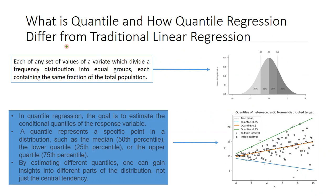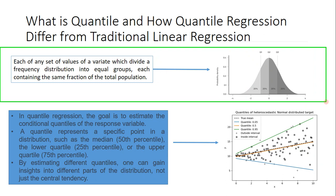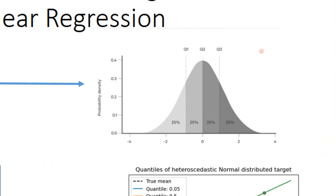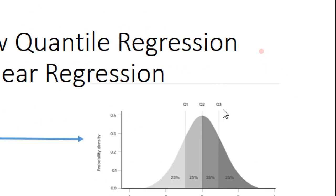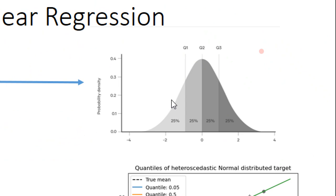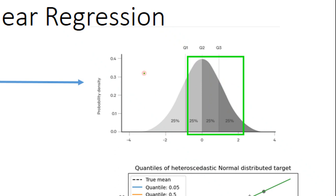If you're not familiar with quantiles, a quantile is simply dividing your data into equal groups. For example, looking at a normal distribution, it is divided into 25th percentile, then 25%, then the next 25%, then the final 25%. This gives us the first quantile, second quantile, and third quantile. Using quantile regression, I can choose to predict only a specific region — for example, only the top 25 percentile.